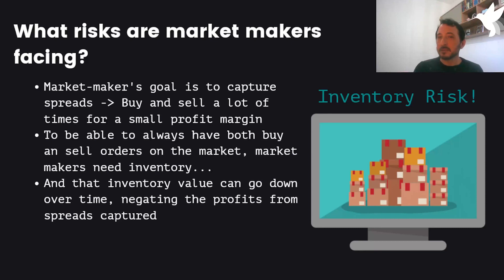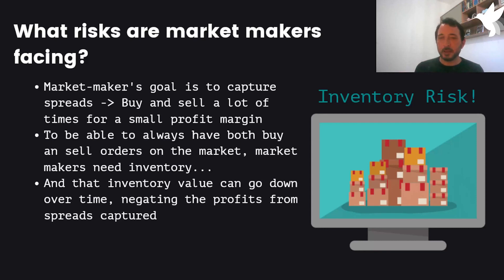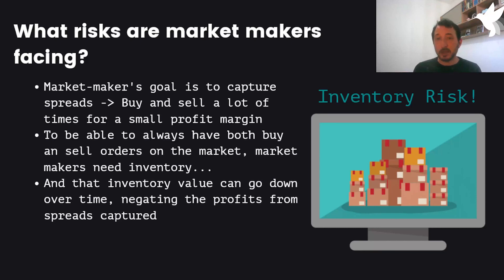If I have an inventory of BTC, the amount of spreads I capture as a market maker could not be enough to cover moments where the price enters a downtrend. Because that means I'm capturing the spreads, my strategy is working, I'm doing a lot of opposing trades — great. But my inventory has a value. If the price goes down, the whole value of my portfolio also goes down. So this is where hedging comes in.